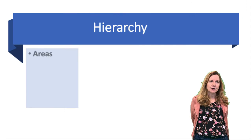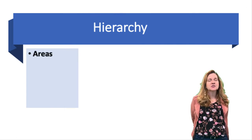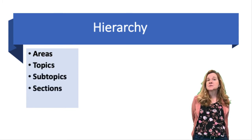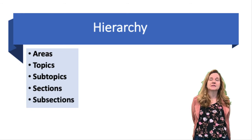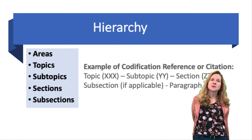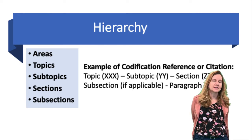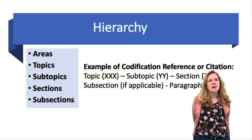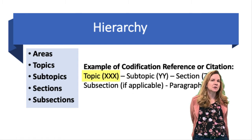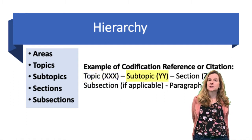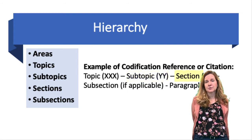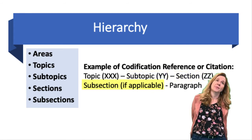There's a hierarchy: the area is where you start, then from areas you go to topics, then subtopics, then sections. There are also subsections, but only if applicable. An example of the codification reference — which we also call the citation — starts with a three-digit topic code, then a hyphen, a two-digit subtopic code, then a two-digit section code. If applicable, there is also a subsection and even a paragraph.